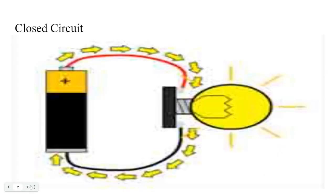This is a closed circuit. A closed circuit is a circuit that works. As you can see, the electricity is going from the positive terminal of the battery to the light bulb and back to the negative terminal of the battery.